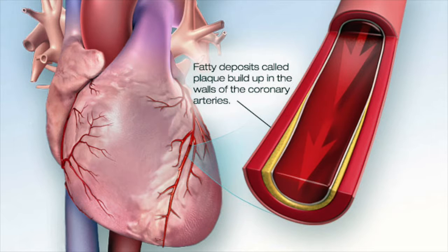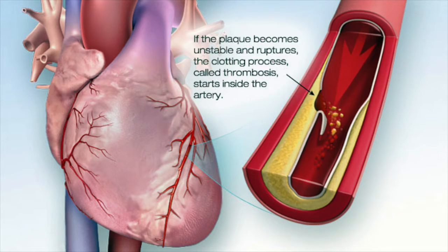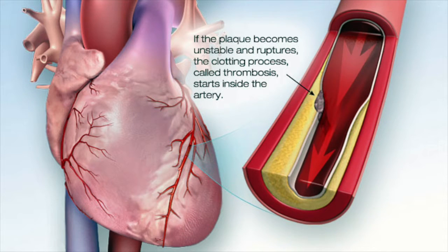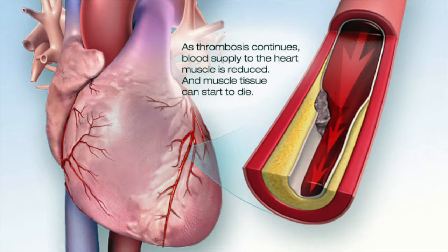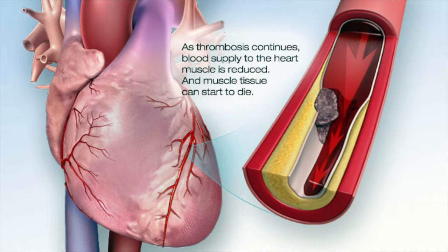If this plaque becomes unstable and ruptures, the clotting process called thrombosis starts inside the artery. As the thrombosis continues, the blood supply to the heart muscle is reduced.